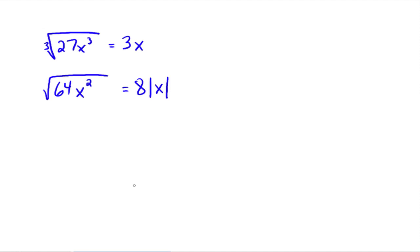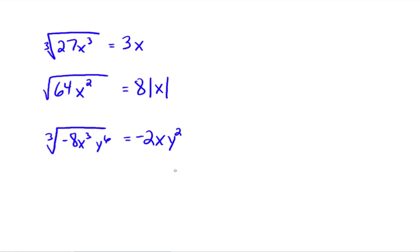For the square root of 64x squared, we would need 8 times the absolute value of x, because we don't know what x represents. If we knew x was positive, it would just be 8x. For the cube root of negative 8x cubed y to the sixth: that's negative 2 (because negative 2 cubed is negative 8), times x (cube root of x cubed), times y squared (because the cube root of y to the sixth is y squared). We don't need absolute value bars since we have an odd index. That's it for an introduction to radicals — study well and let me know if you have any questions.